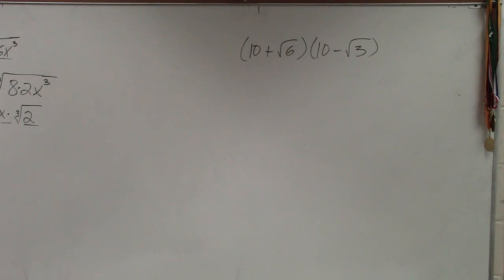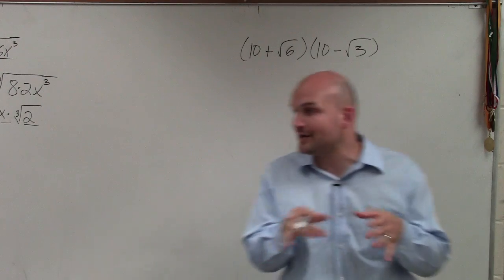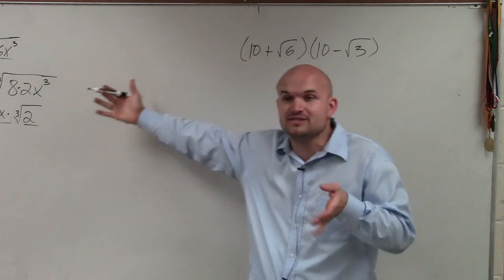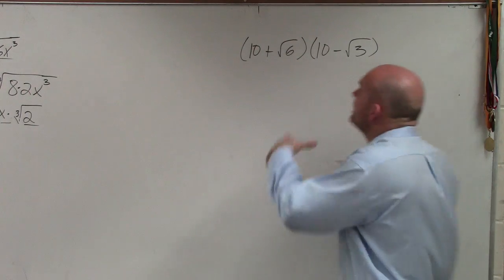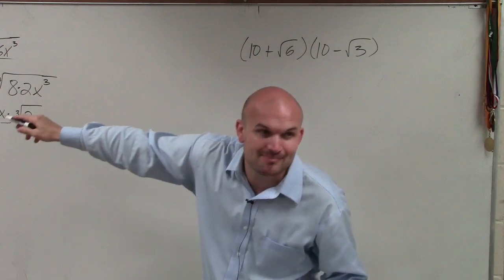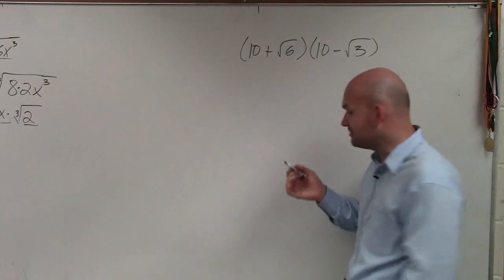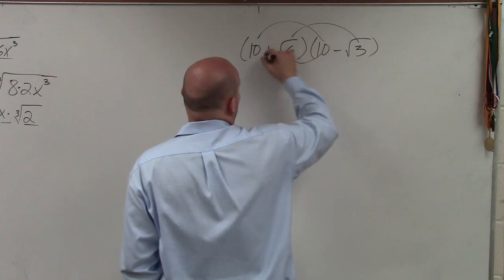All right, basically ladies and gentlemen, now we're doing a binomial. If you guys can see, now we have radical expressions. Before, we just did multiplying — it was just an expression by an expression. Now we have what we call binomial expressions, multiplying binomial expressions. So the main important thing that we want to make sure we do with this is we apply FOIL.